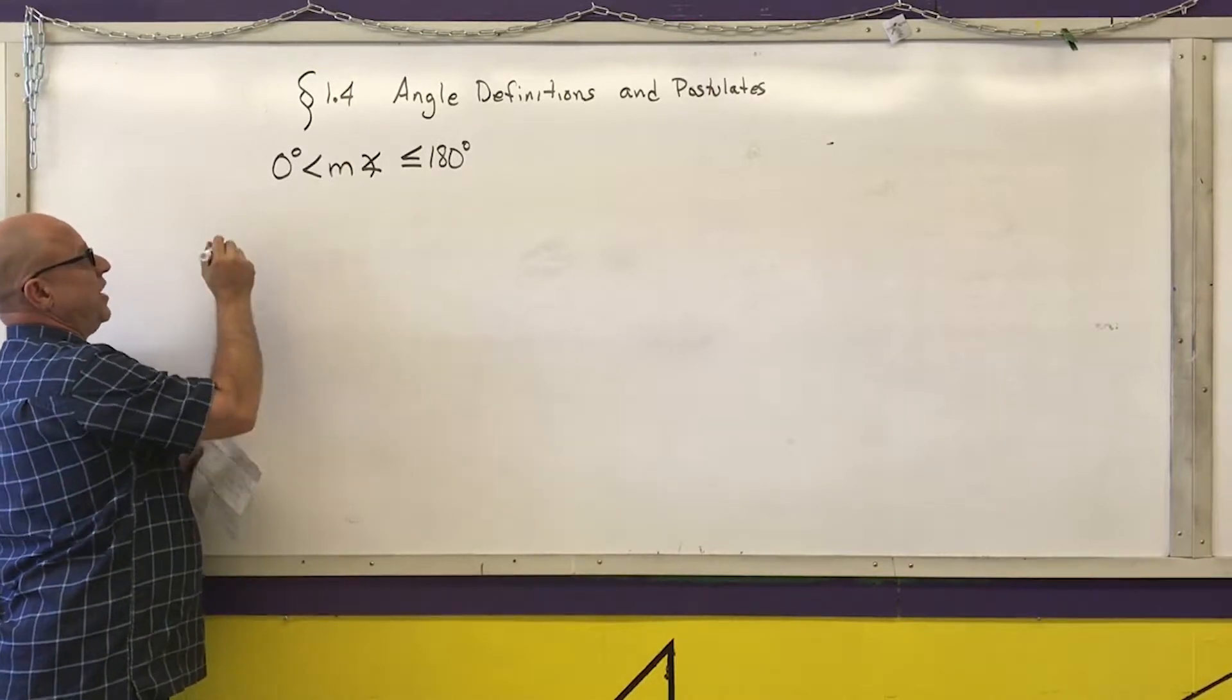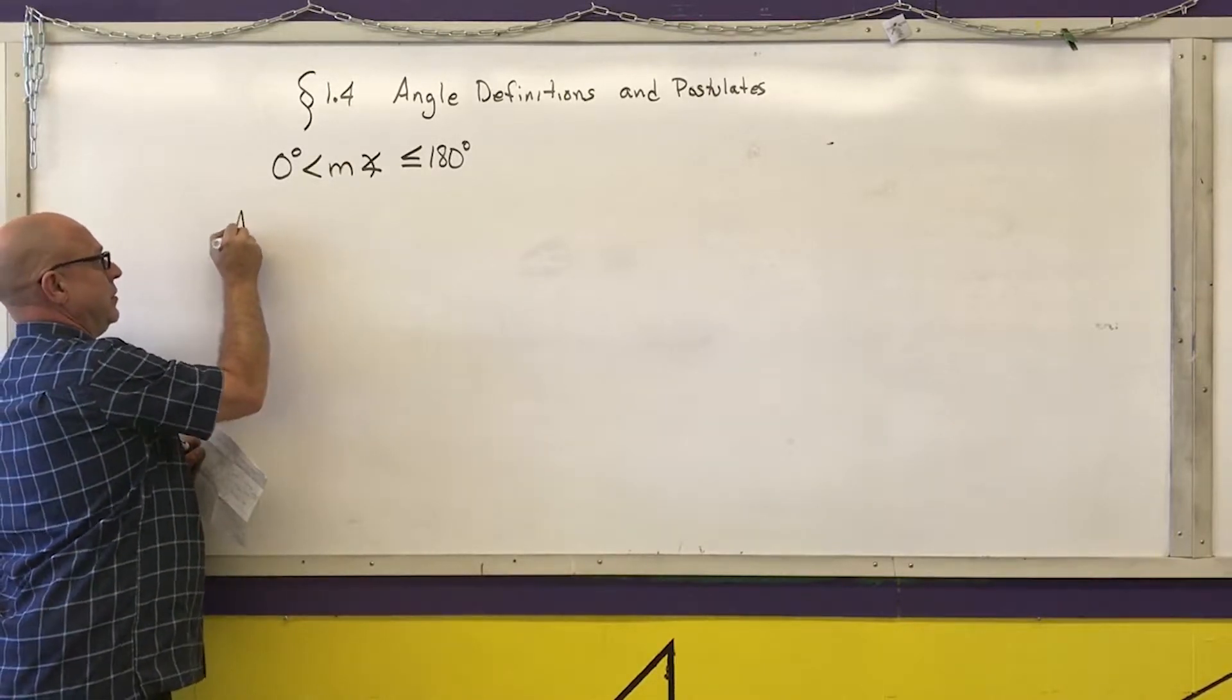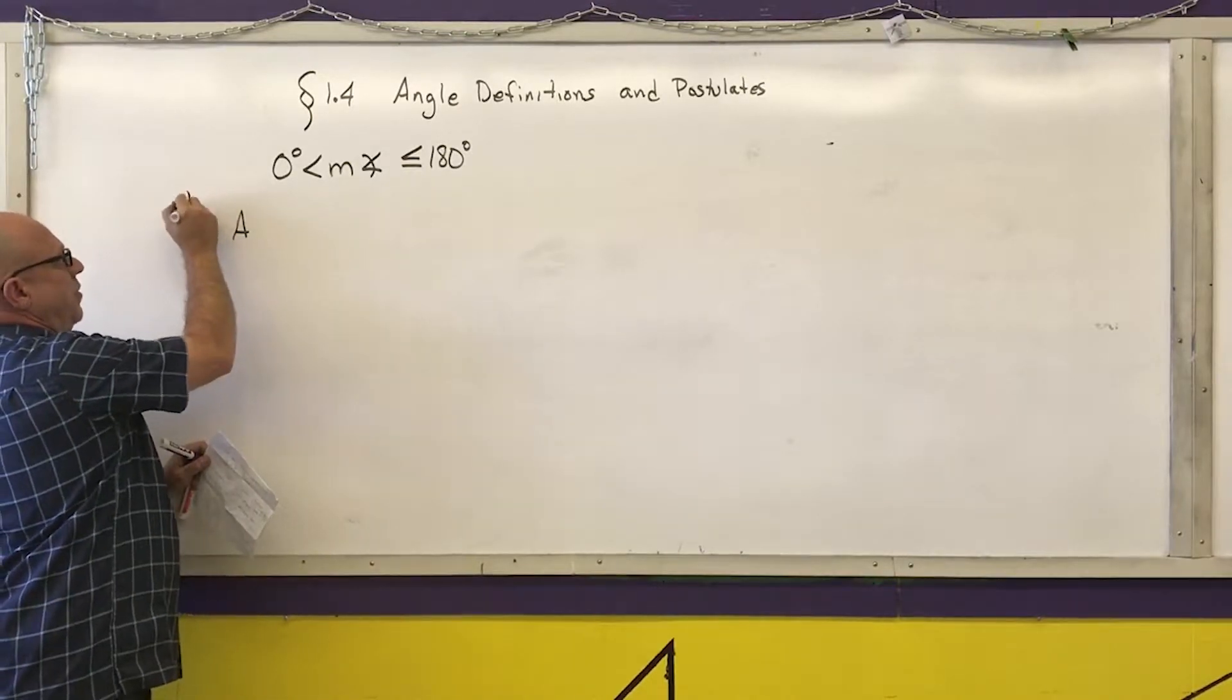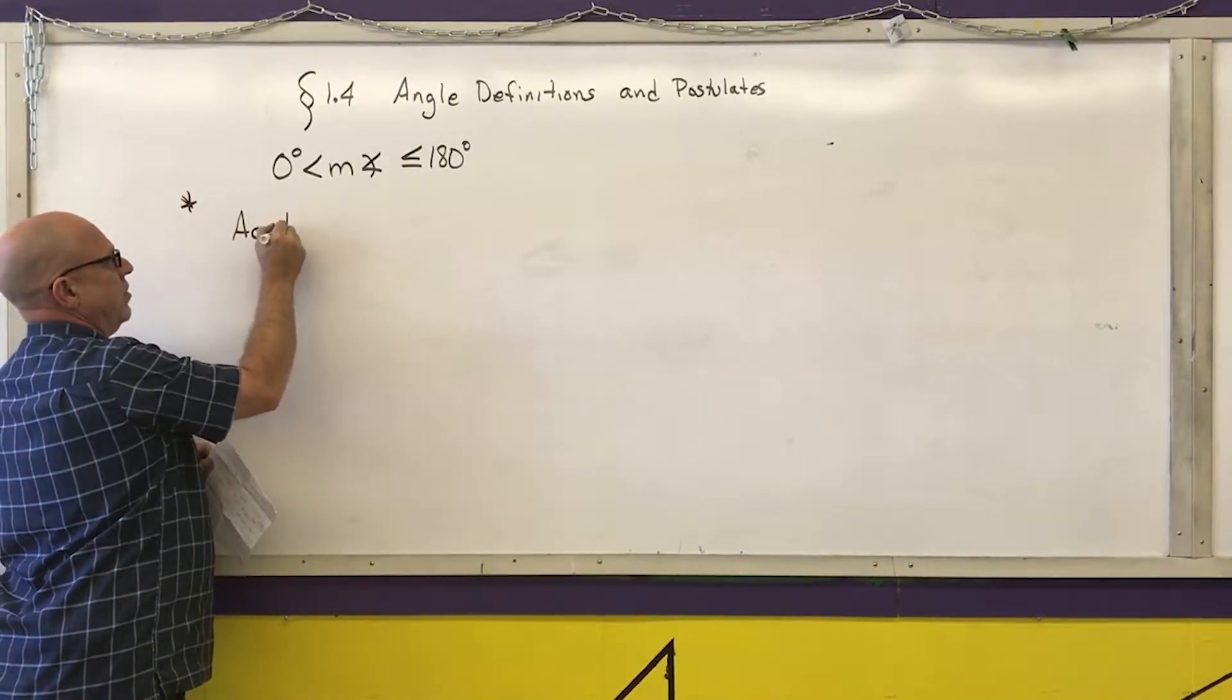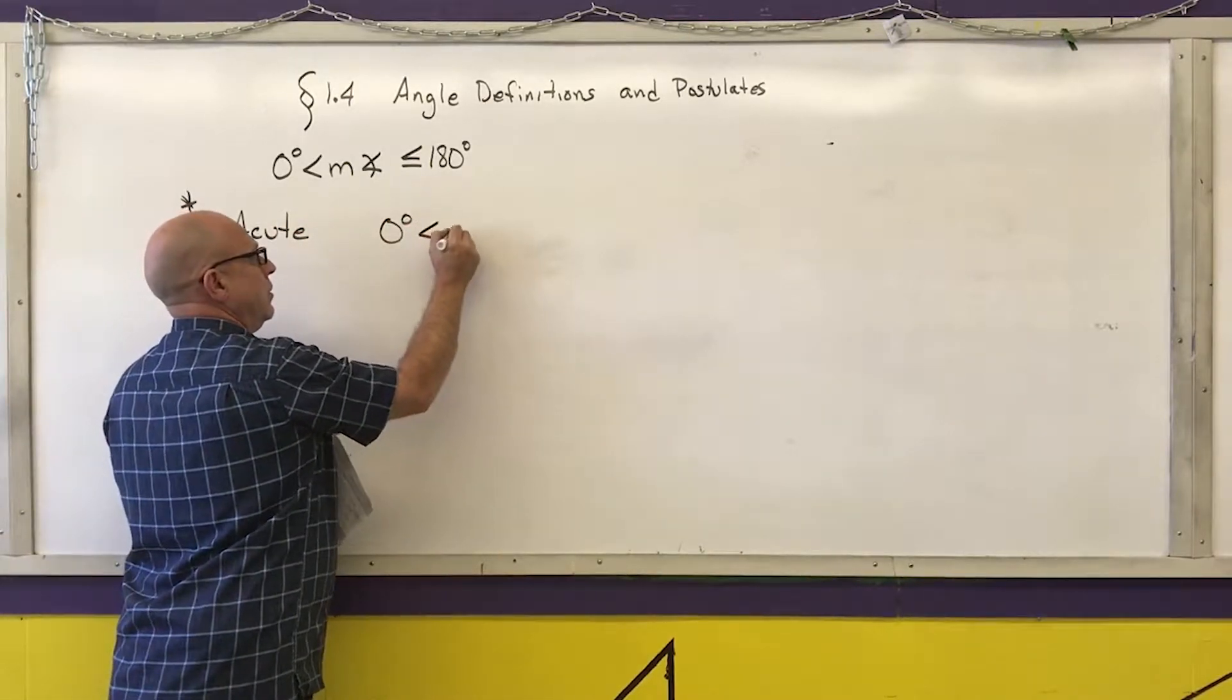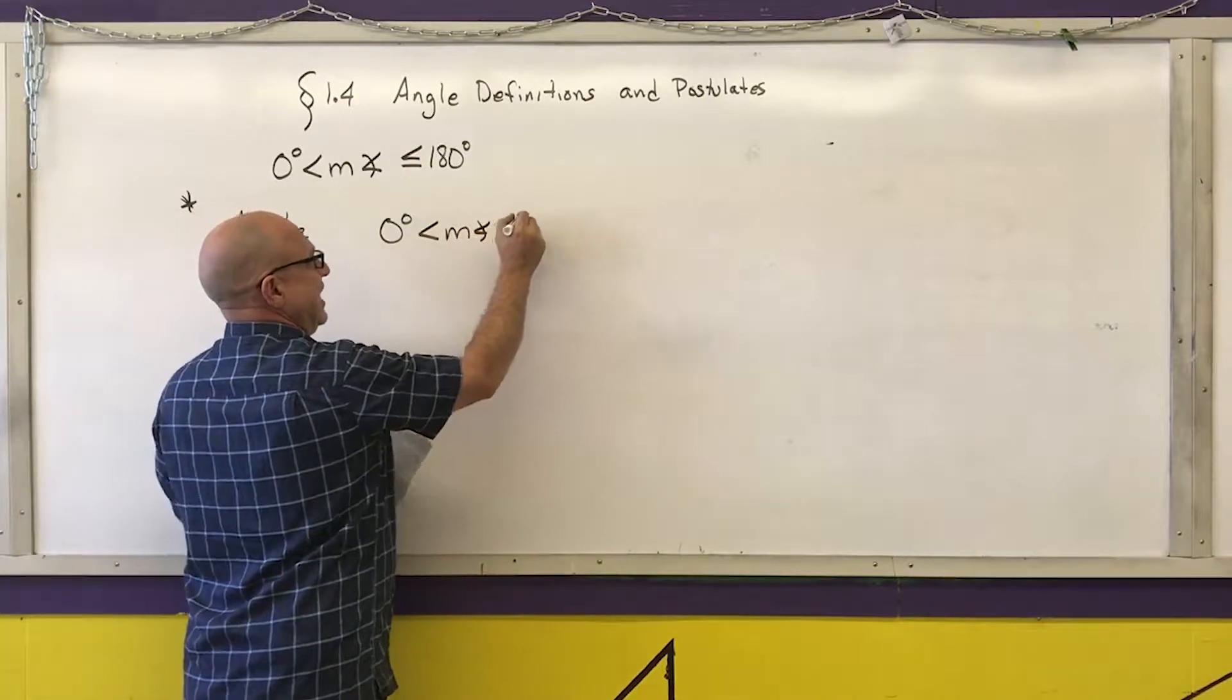So using this as all my angles are here, we can classify angles by their sizes. These are all definitions. Make sure these all get in your vocab book. An acute angle has a measurement more than zero but less than 90.